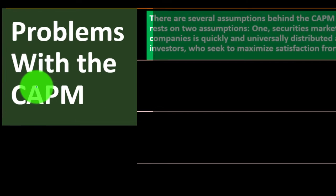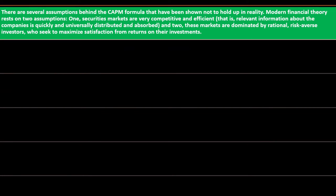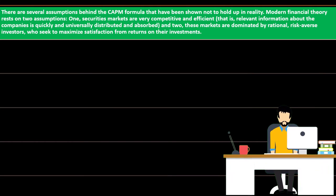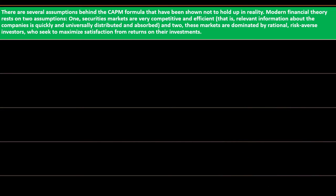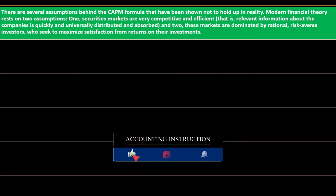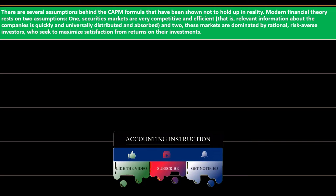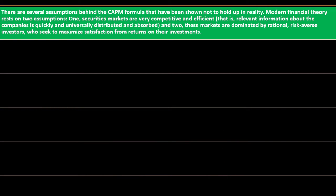There are problems with the CAPM. Whenever we try to figure out what will happen in the future, we are making assumptions. We should be aware of when those assumptions hold and when they may not. There are several assumptions behind the CAPM formula that have been shown not to hold up in reality. Modern financial theory rests on two assumptions: one, securities markets are very competitive and efficient — relevant information about companies is quickly and universally distributed and absorbed.